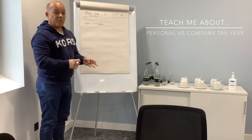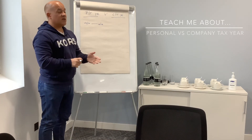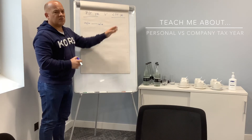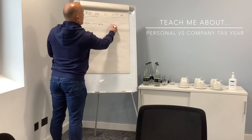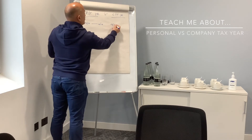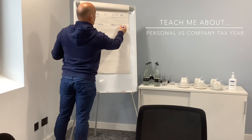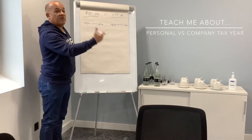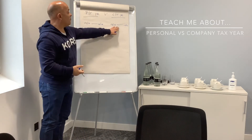Now your company tax year, it's a 12 month anniversary so it all depends on the date that you form your company. So let's just use a random one for now - let's say June. So now you've got June of the current year and it goes all the way through to the end of May the following year. So that's your 12 month cycle.